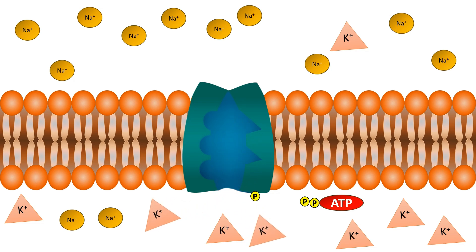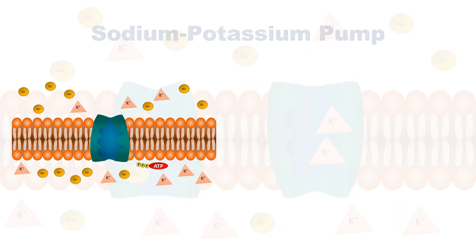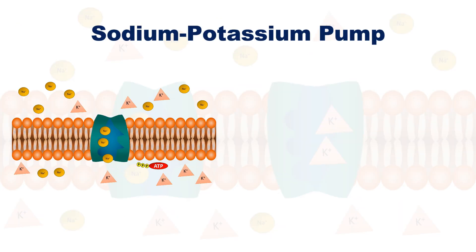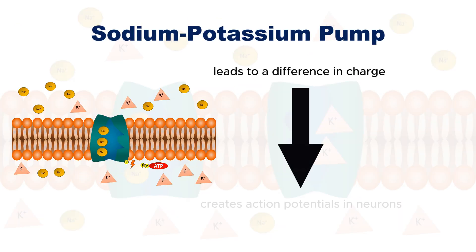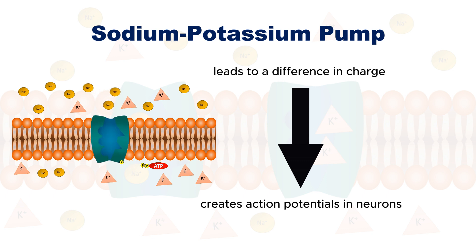The inside of the cell remains more negative compared to the outside. This difference in charge is essential for creating action potentials in neurons, allowing for rapid electrical signaling.